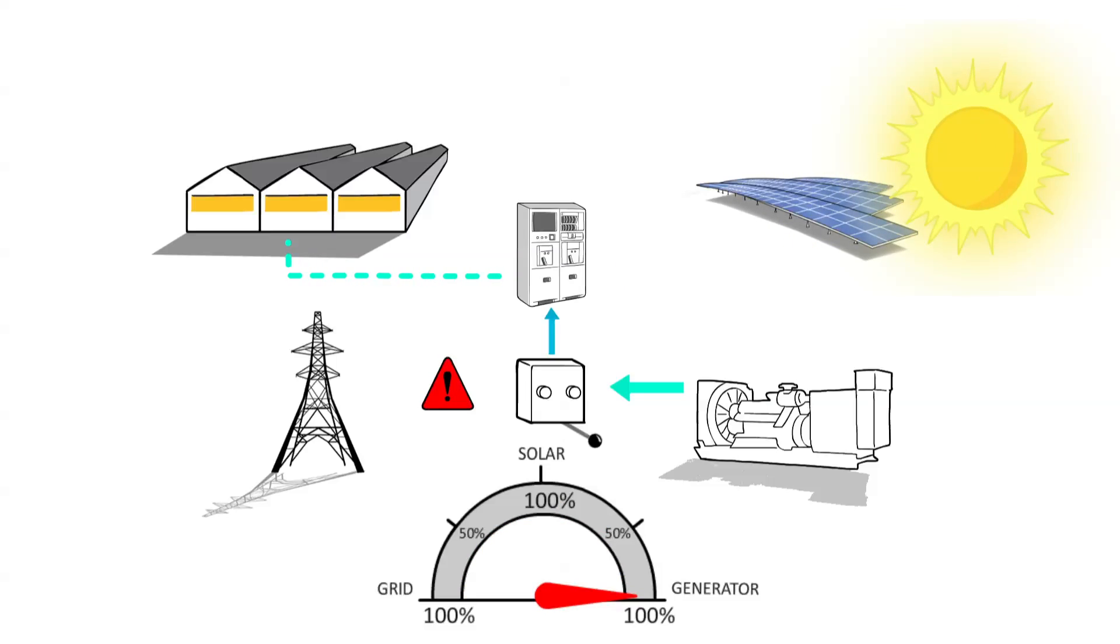If the grid fails and the backup generator is running, or if you're in a region without grid power at all, the solar installation will simply synchronise with the generators, so it can switch between the grid or the generator, while still using electricity produced by the solar panels.